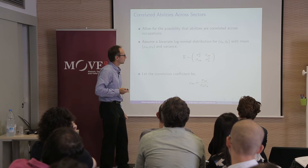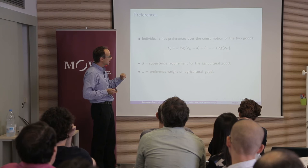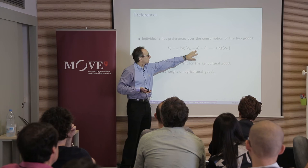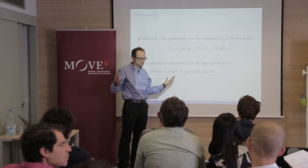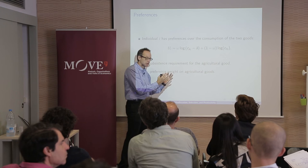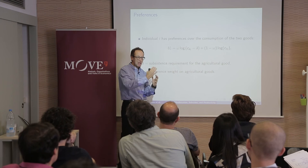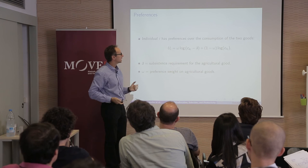There's going to be some correlation of abilities across sectors — it can be negative — and we'll estimate that from the data. On the preference side, it's fairly standard, with a subsistence constraint for agriculture. This is going to work like a typical two-sector growth model, except that if you're unproductive in agriculture you're going to allocate more factors to agriculture to produce this minimum consumption level. Productivity in agriculture is really going to be determined by all the heterogeneity and selection aspects I'm embedding here.